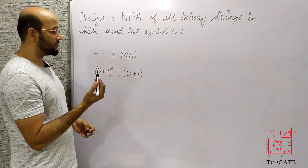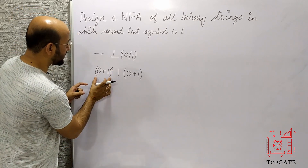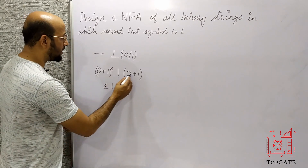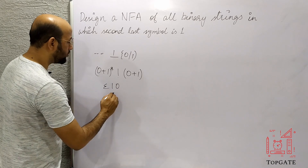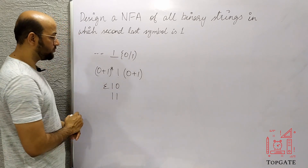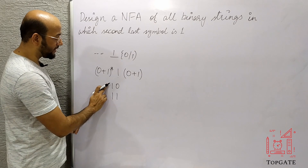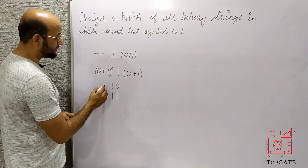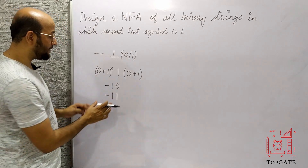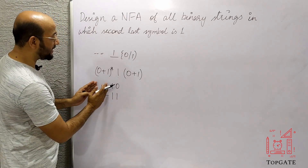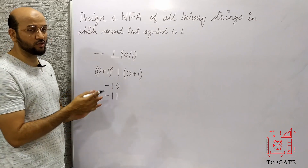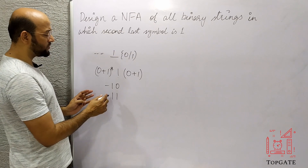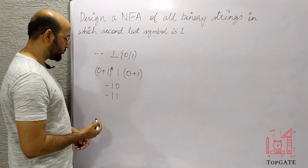What is the shortest string in this case? If the prefix is null, then we have 1 followed by either 0 or 1. So the two minimum strings are '10' and '11'. We have to design an NFA that accepts both '10' and '11', and apart from these, before this 1 we can have any combination of zeros and ones.